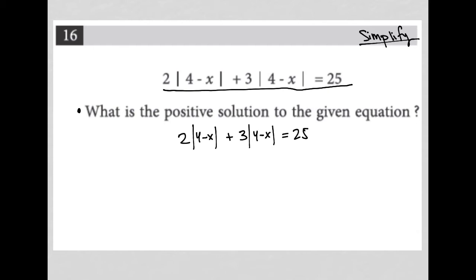The interesting thing about absolute value equations is that our absolute values are treated like variables, in that if we have a common absolute value, like we have here - both of these say 4 minus x - then I'm treating them both like a variable. It's almost like saying this is 2x plus 3x. Since 2x plus 3x equals 5x,